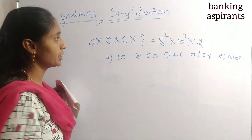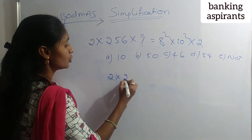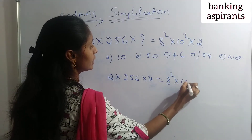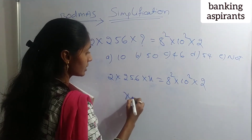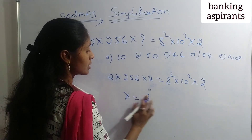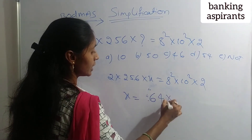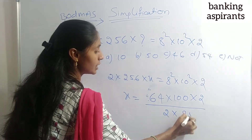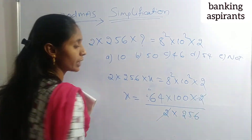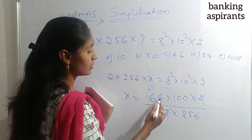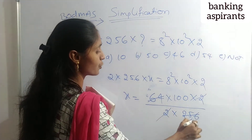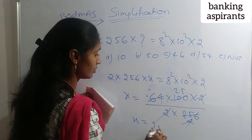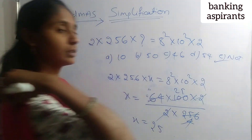Next: 2 into 256 into x equals 8 squared times 10 squared into 2. x equals 8 squared times 100 times 2 divided by 2 times 256. The 2s cancel. 64 divided by 256 equals 1/4, times 100 gives 25. So x equals 25. The answer is none of the given options.